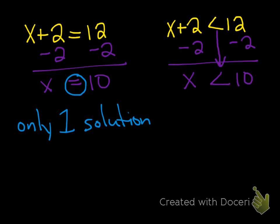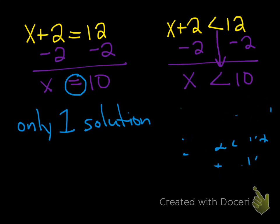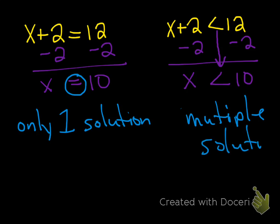Let's just try it. If I plugged in a 10, it would be 10 plus 2 is less than 12, which means 12 is less than 12 — that does not work. Let's pick a number less than 10, so let's do 5. So 5 plus 2 is less than 12; 5 plus 2 is 7, and 7 is less than 12. So when you have an inequality, you can have multiple solutions — that means more than one thing will satisfy that inequality.